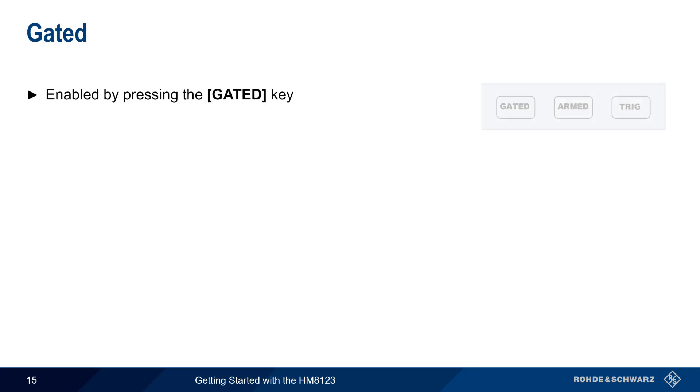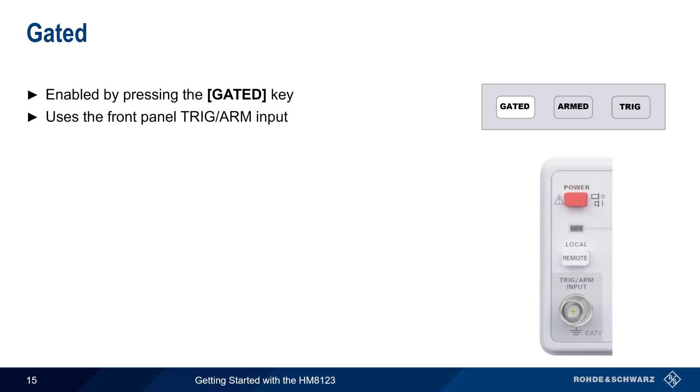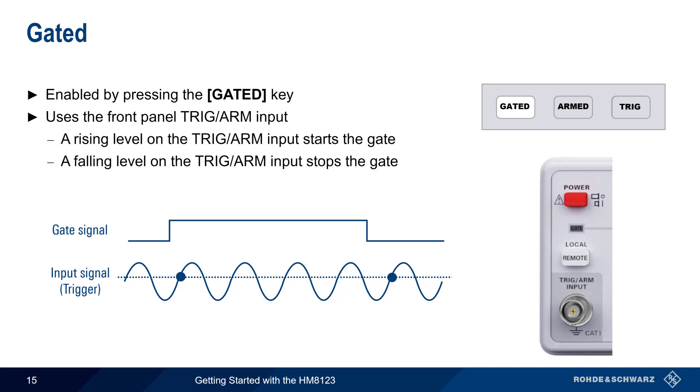The Gated function is enabled by pressing the Gated hard key. Gated measurements use the Trig Arm BNC connector on the front panel. In Gated mode, a rising level at this input starts the measurement gate the next time the trigger condition is met. And a falling edge on this input stops the gate. The gate time is therefore determined by these external signals. And this external signal has a higher priority than any other configured gate settings.